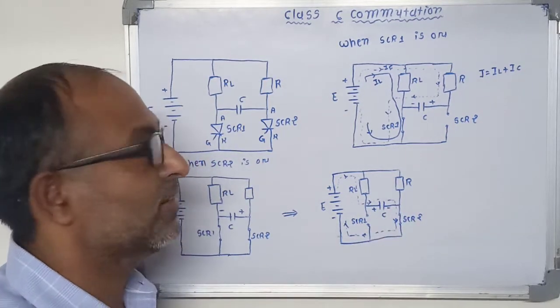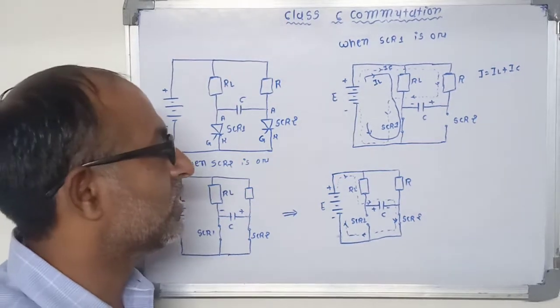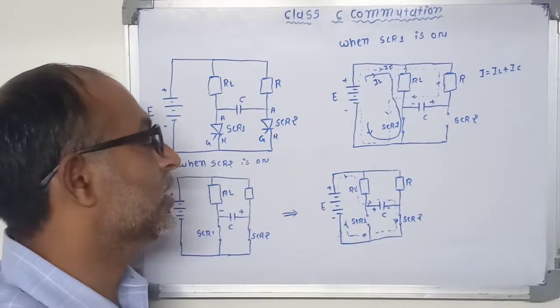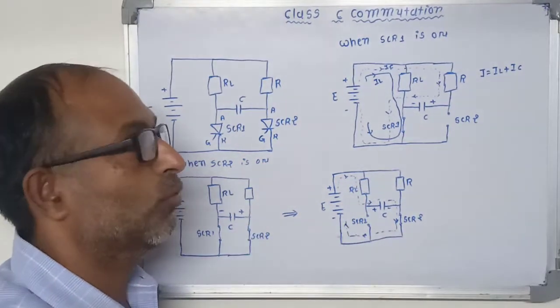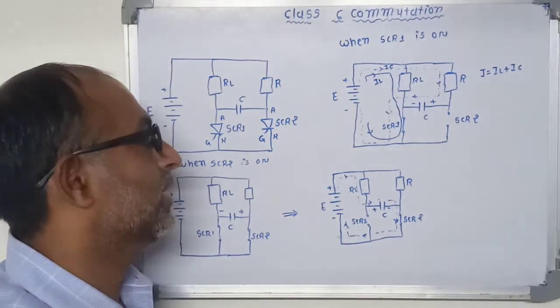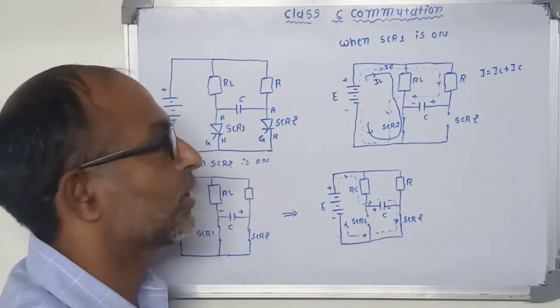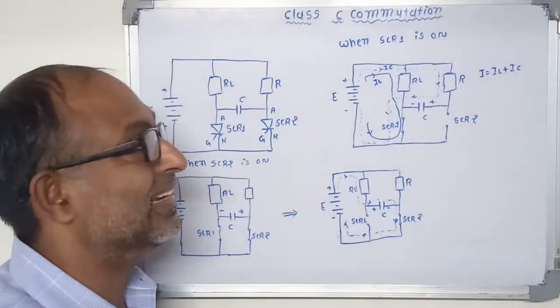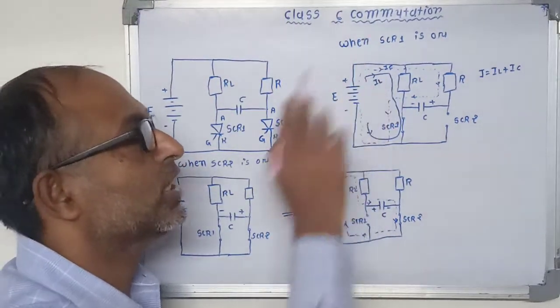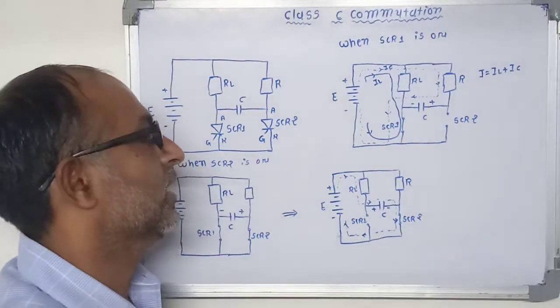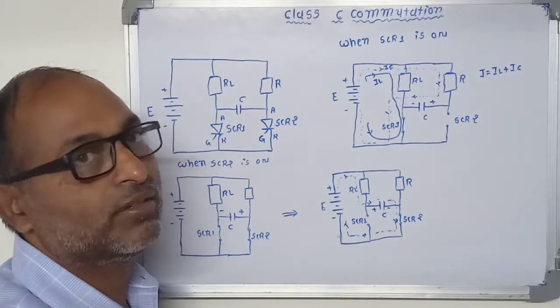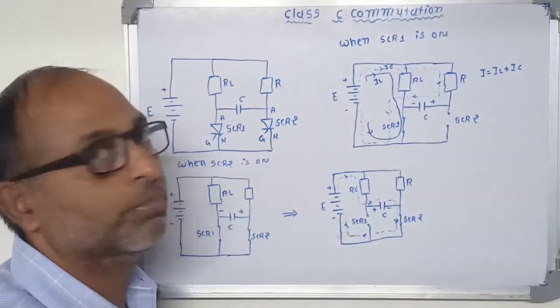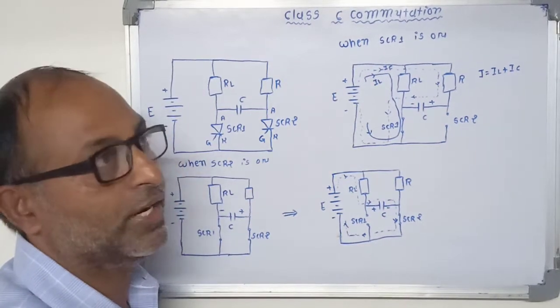So we can say that SCR1 is turned off by SCR2 and SCR2 is turned off by SCR1. So it is most important. Now this SCR1 and SCR2 both are turned off by the capacitor voltage. That's why it is called voltage type commutation and it is used for high frequency in parallel inverter.